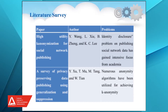The next paper is 'A Survey of Privacy Preserving Data Publishing using Generalization and Suppression' by Y, Z, U, T, Ma and others. The problem identified here is that even though they applied many anonymity algorithms for achieving k-anonymity, there is still no transparency.